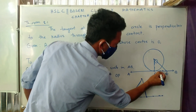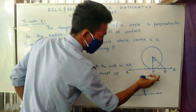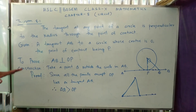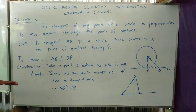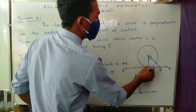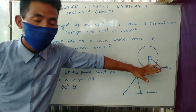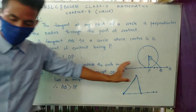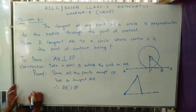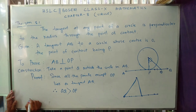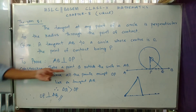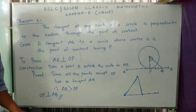This is true for every point on the tangent line. Therefore, OP is perpendicular to AB. This is the theorem — OP perpendicular to AB, making a 90-degree angle.